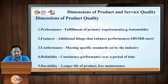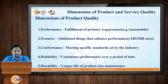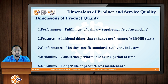Whenever we discuss quality, we should also discuss the dimensions of product quality as well as service quality. If you are providing a product it will have product quality; if you are providing a service it will have service quality. The first dimension of product quality is performance — fulfilment of the primary requirement. For example, in an automobile the primary requirement is that it should drive, so if your vehicle is driving satisfactorily, its performance is at par.